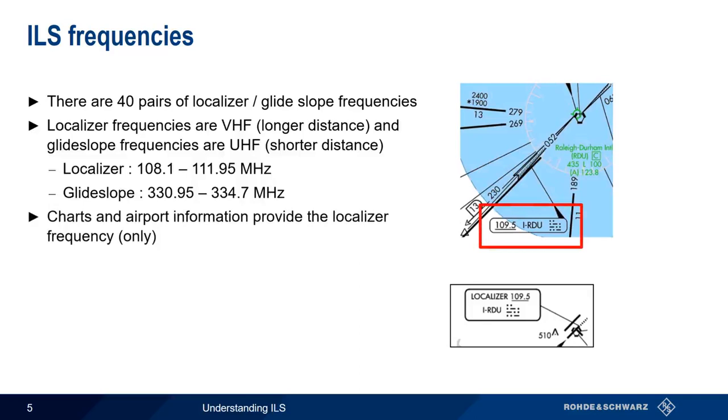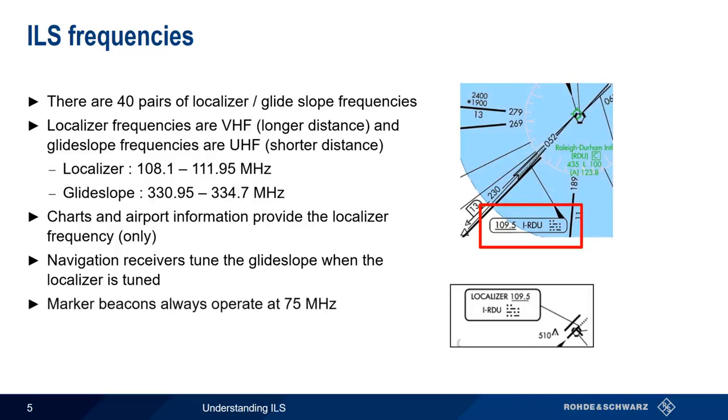Note that aeronautical charts and airport information only provide the VHF localizer frequency, since navigation receivers will automatically tune to the paired glide slope frequency whenever the localizer is tuned. On the other hand, there's no real need to tune marker beacons, since these all operate on the same frequency, namely 75 MHz.